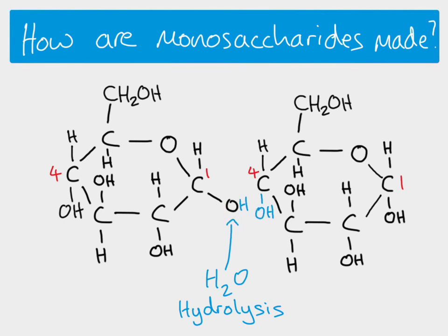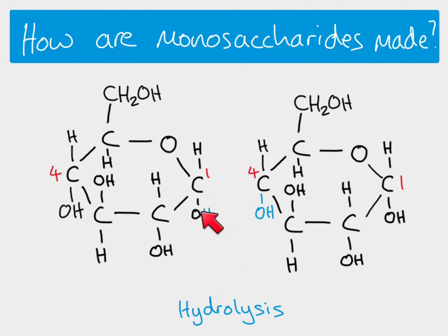Redrawing that, both of our alpha glucose molecules are now correct. Carbon one on this alpha glucose has a hydroxyl group, and carbon four has a hydroxyl group. Those atoms came from the water that was added, and that's it.